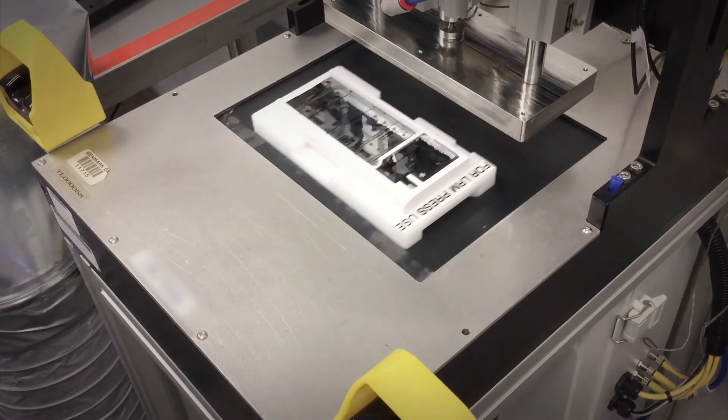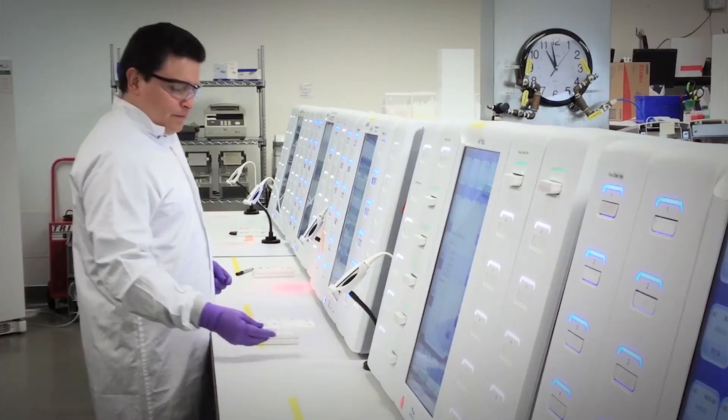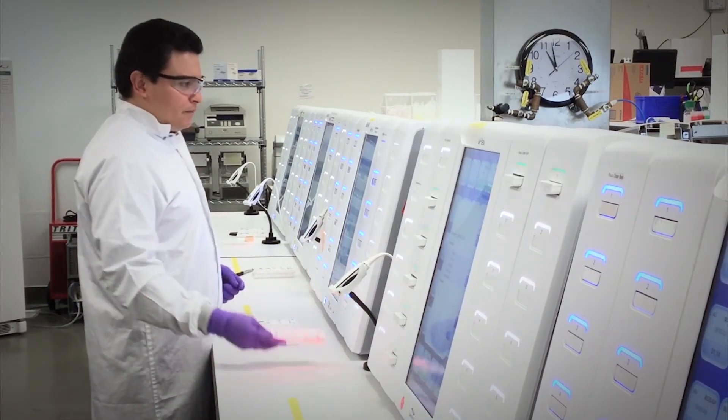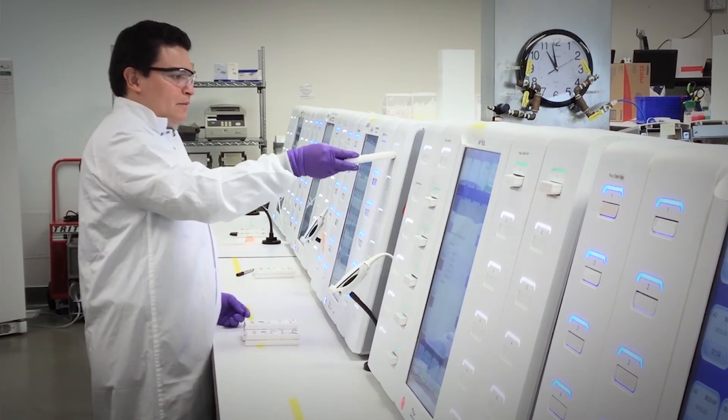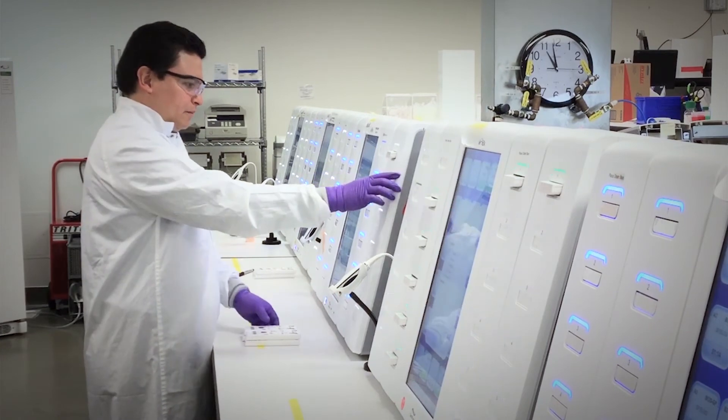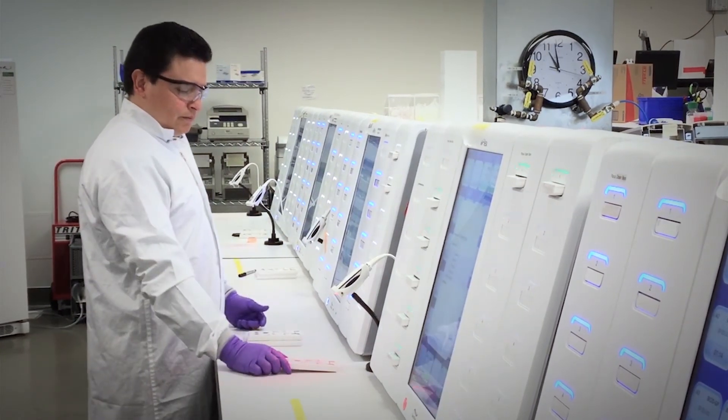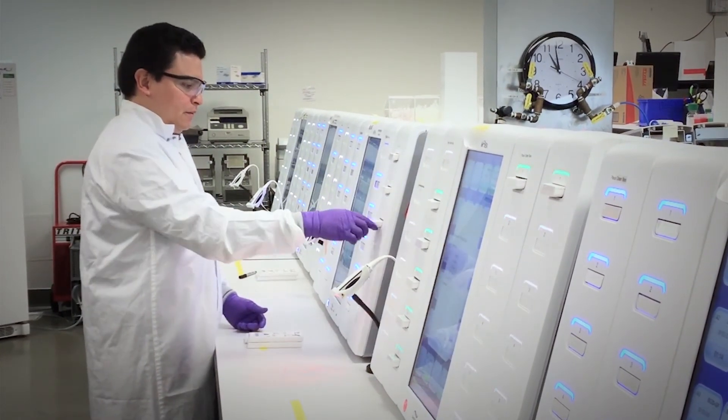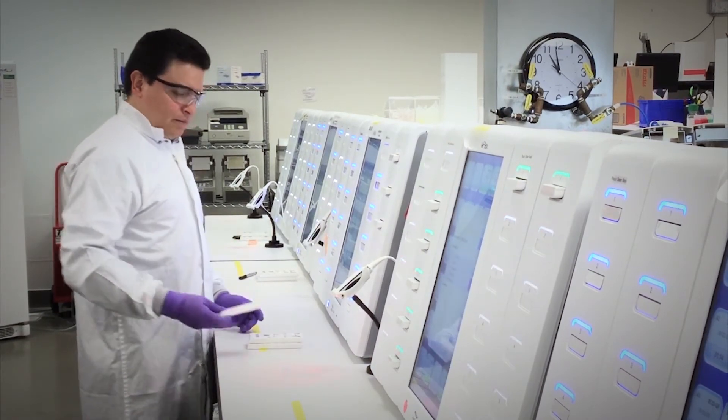Once final assembly is completed, a sampling of cartridges from each lot are randomly selected for a final quality check. We run the sampled cartridges through functional testing on the ePlex system using a quality control mix that has predefined positive and negative targets. This final QC check allows us to ensure manufacturing lot quality before shipping to customers.